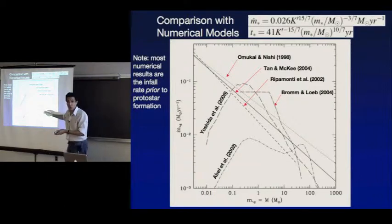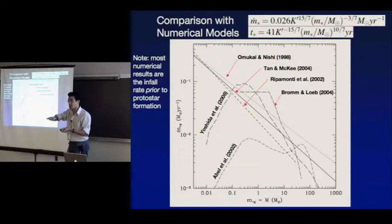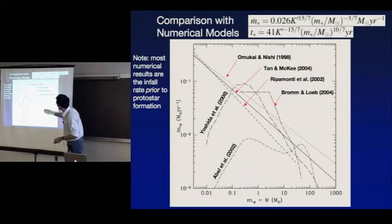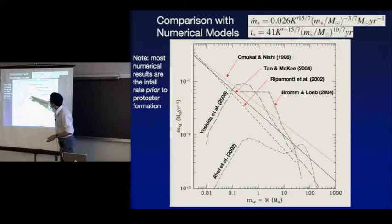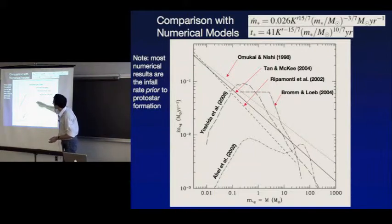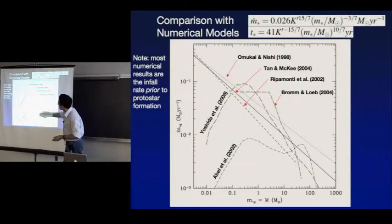In the simulations, when they cannot follow that evolution, they've measured the accretion rate in mass shells before the star has really grown. I'm comparing our analytic result — the dark line — with various numerical estimates, which basically agree within factors of a few. I wouldn't push it more than that.